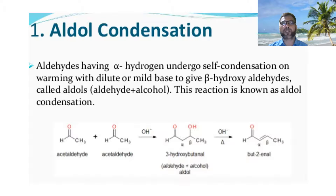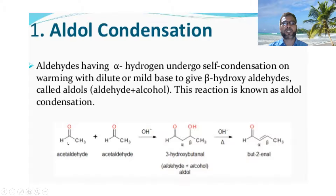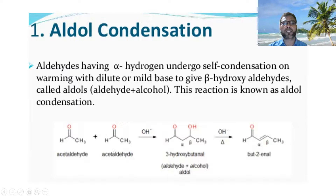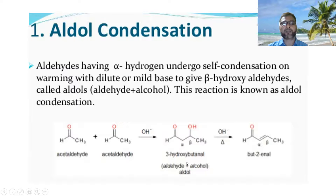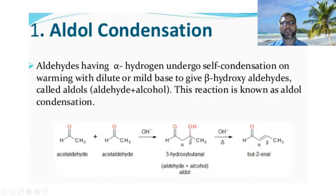Now you can see the reaction scheme. Here, this is acetaldehyde — this is the functional group aldehyde and this is the CH3. These hydrogens are known as alpha-hydrogens. So, acetaldehyde has alpha-hydrogens. In aldol condensation, you have another acetaldehyde, and these two acetaldehydes undergo self-condensation after removing the small molecules. So, you can see here the formation of 3-hydroxybutanal — butanal means aldehyde, and there is also an alcohol functional group. This position is alpha and this position is beta. Further, it gives but-2-enal, which is an alpha-beta unsaturated aldehyde.